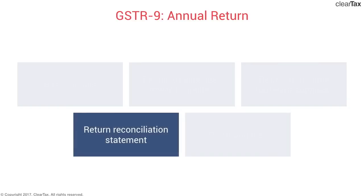The fourth and most important portion of the annual return is the return reconciliation statement. What you're trying to do here is reconcile the tax paid as per all your monthly returns — which are consolidated — with the actual tax payable based on your statement of profit and loss, whether audited or not. That's where you'll have to reconcile your tax liability and payments.